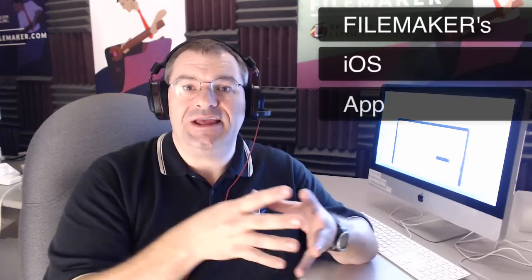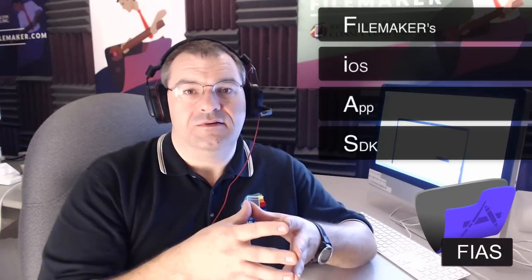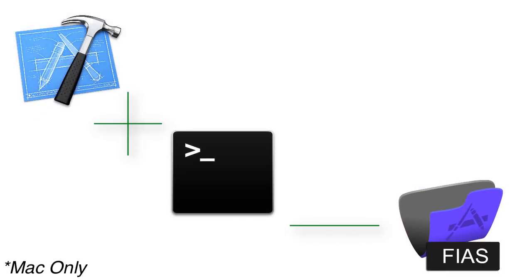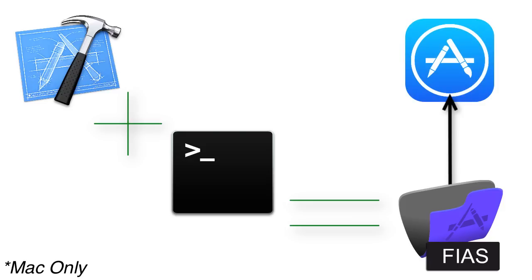This video course covers taking an existing FileMaker app and running it through FileMaker's iOS App SDK, or what we call FIAS. FIAS is a tool that leverages Xcode and use of the command line on a Macintosh to output an application that you can submit to Apple for their review and potential publication on Apple's App Store.